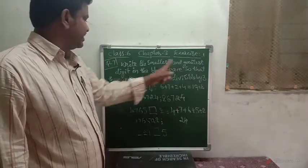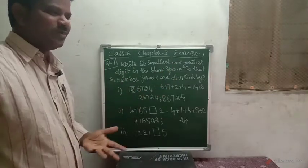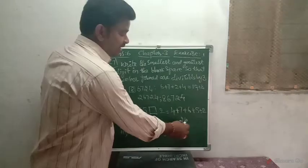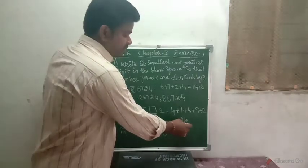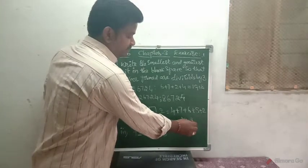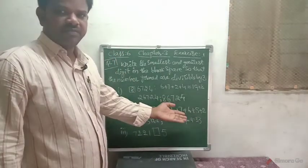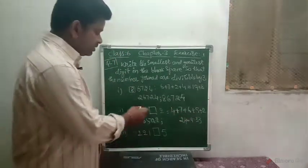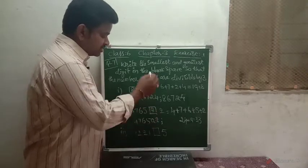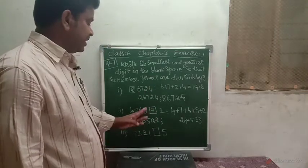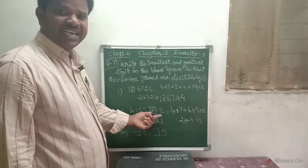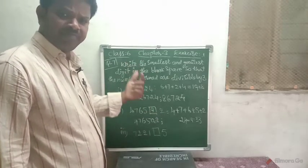Next, it is asking to write the greatest digit. The greatest one-digit number is 9. If I add 9 to 24, what is the number? 33, which is a multiple of 3. So if you add 9, just write 9 in the blank. The number formed is exactly divisible by 3.